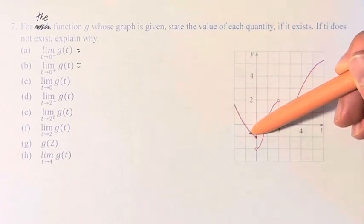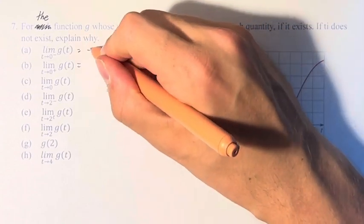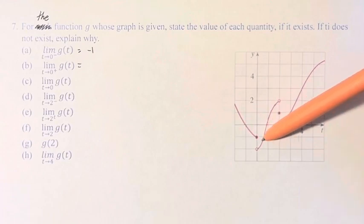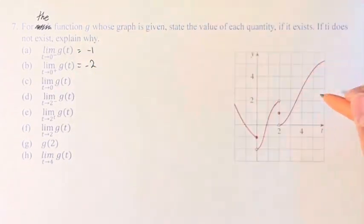As t approaches 0 from the left, the function goes to this point which has a y value of negative 1, so the limit is equal to negative 1. As we come from the right, it approaches this point with a value of negative 2. Therefore, the answer is negative 2.